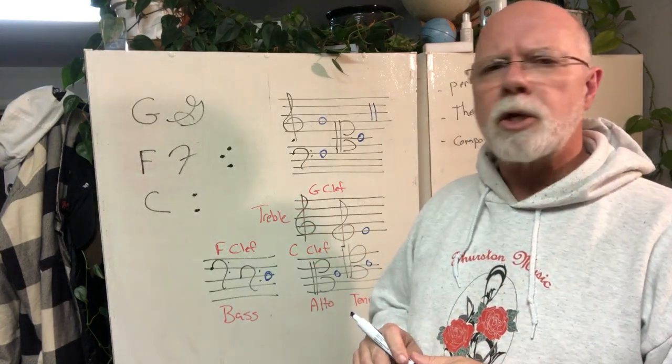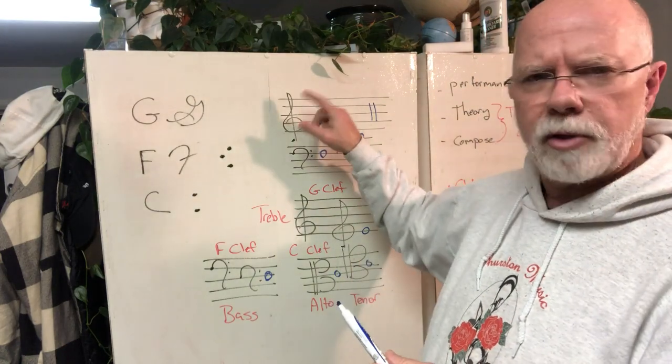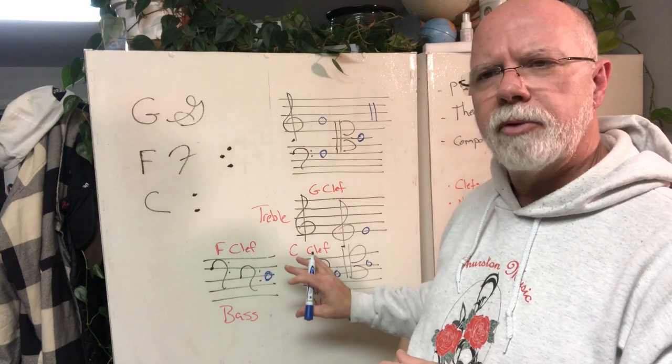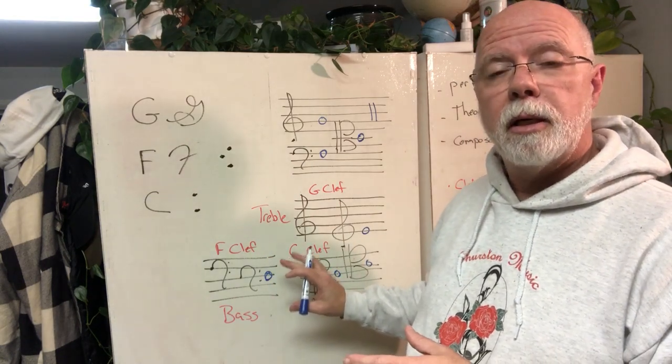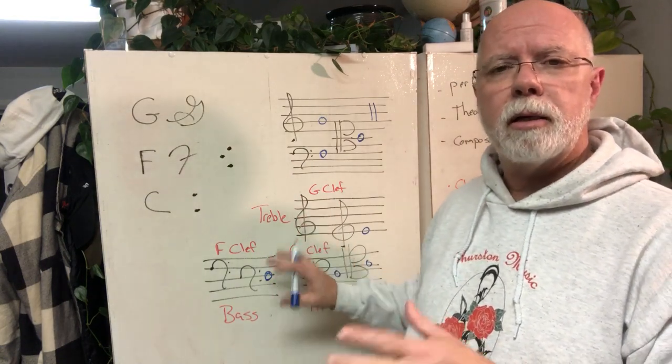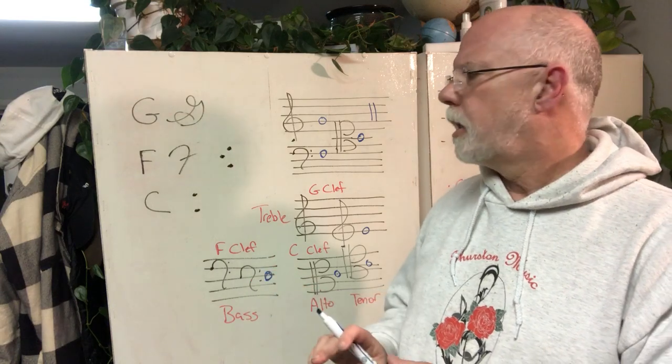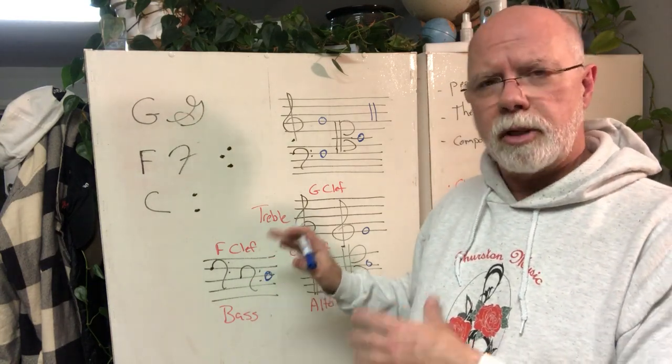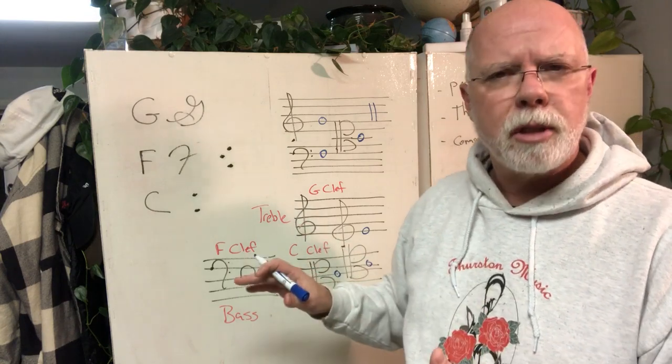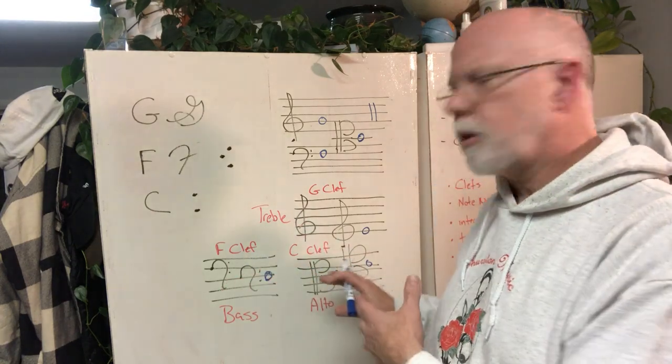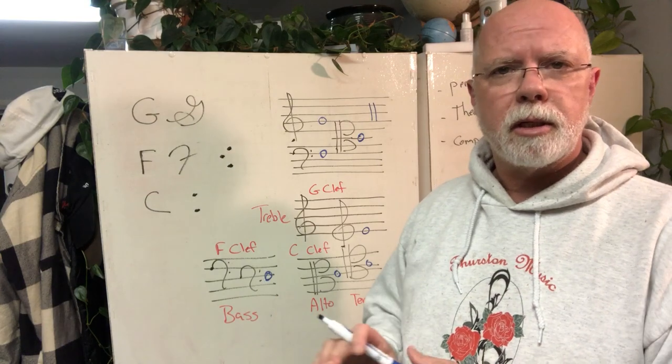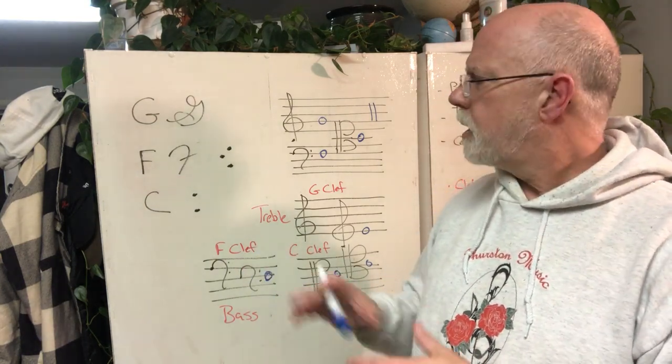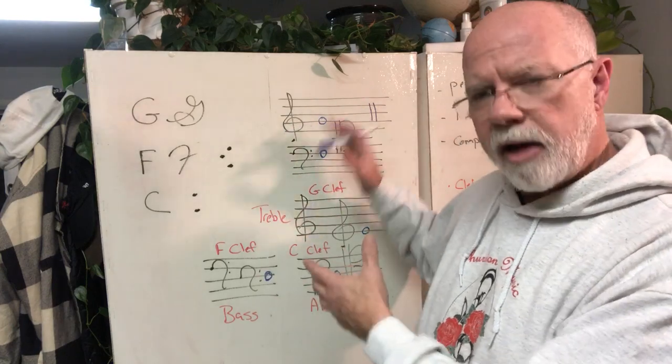Bass clef euphonium—there's also a treble clef euphonium part. The alto clef tends to be violas and orchestral trombone parts. The tenor clef you will see in the trombone part again, and usually orchestral trombone playing. Bassoons can play in the treble clef or the tenor clef, and so can cellos.